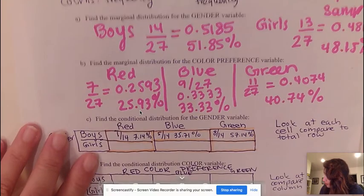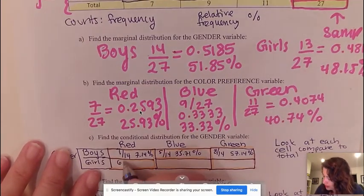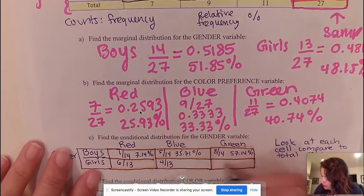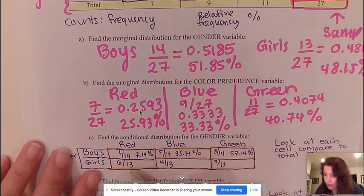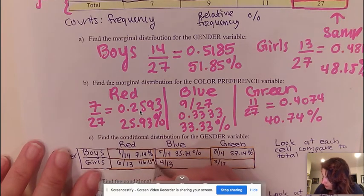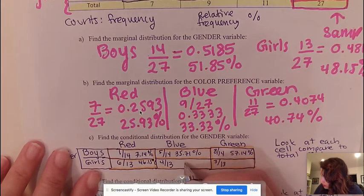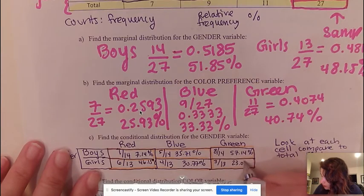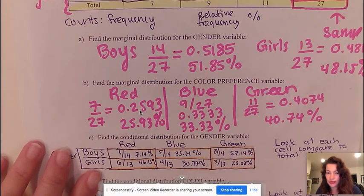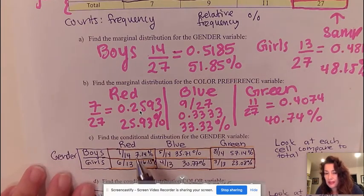So again for girls it would be 6 out of 13, 4 out of 13, and 3 out of 13. Then we would calculate this as a percentage. 6 out of 13 is 46.15%, this would be 30.77%, and this is 23.08%. If you add up the whole row we should get 100%. So basically this is it for the conditional distribution for gender.